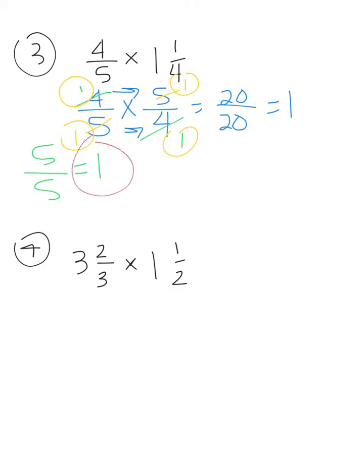Now number 4 we have 3 and 2/3 times 1 and 1/2. So go ahead and pause and then come back. 3 times 3 is 9 plus 2 is 11/3. 2 times 1 is 2 plus 1 is 3/2.